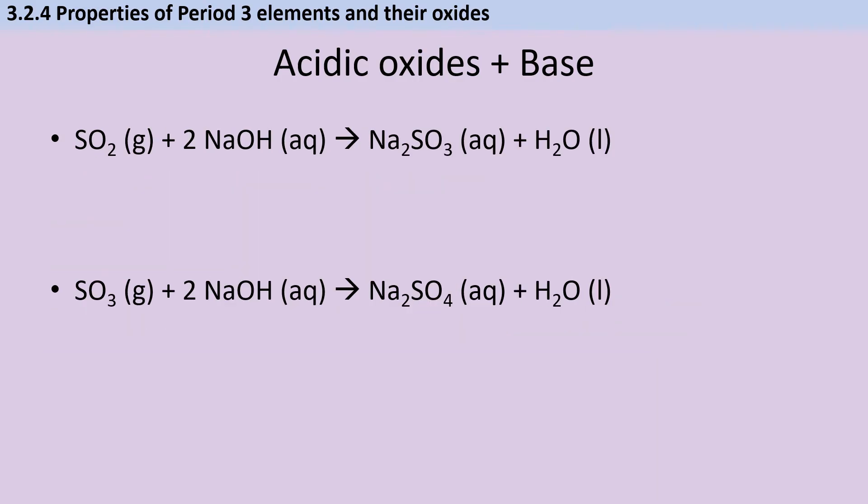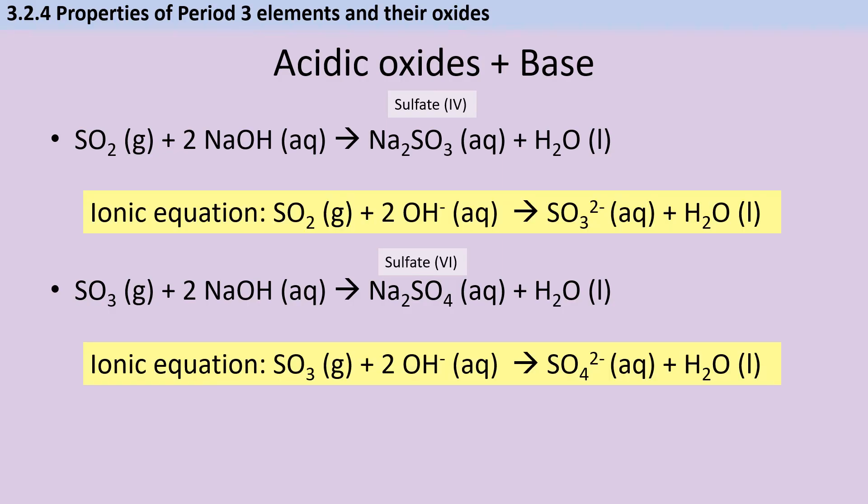We can also express this in an ionic equation which looks a bit like this. The equivalent equations for sulfur dioxide and sulfur trioxide are much more straightforward. One mole of either gas reacts with two moles of sodium hydroxide to make a mole of salt and a mole of water. Sulfur dioxide forms sodium sulfite, or to give it its proper IUPAC name, because AQA will, sodium sulfate four, where the four represents the oxidation state of sulfur in the SO3 2- ion, and sulfur trioxide forms sodium sulfate or sodium sulfate six. Again, we can also write ionic equations for each of these in which we skip the sodium spectator ions.